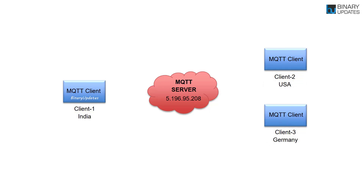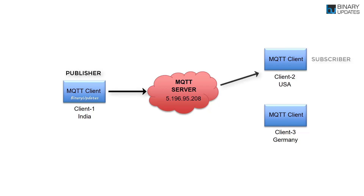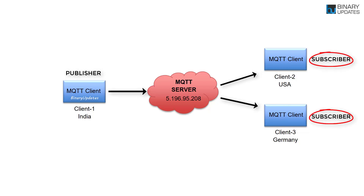Now when Client1 wants to send messages to Client2 and Client3, Client1 will publish a message to an MQTT server — the publish mechanism is used to send messages. And because Client2 and Client3 are subscribed to the MQTT server, they will receive those messages. The subscribe mechanism is used for Client2 and Client3 to receive messages published by Client1. This communication is possible because all clients are connected to the same central public MQTT server, which is accessible from anywhere in the world.